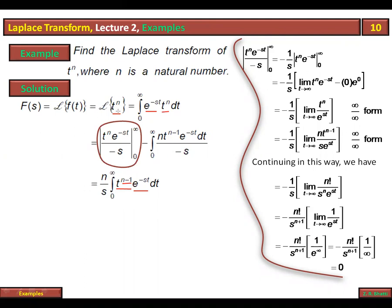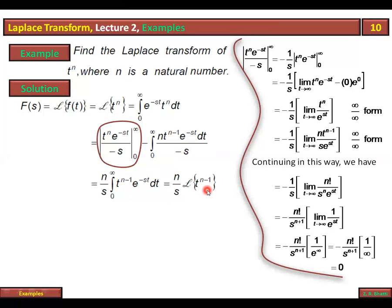Observe that the Laplace transform of t^n gives us the Laplace transform of t^(n-1). So the result contains n/s multiplied by the Laplace transform of t^(n-1). This is such a portion of the Laplace transformation of t^(n-1), and n over s will be given to us.